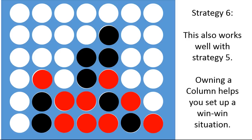It also works really well with strategy five. If you own a column, it can help you set up this win-win situation. So that's also a really good thing. So sometimes you almost have to build on top and then underneath afterwards so that you own a column and you can use that to your advantage to actually setting up something like this.